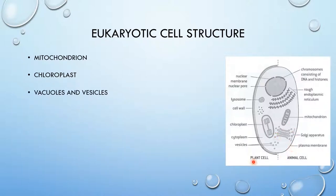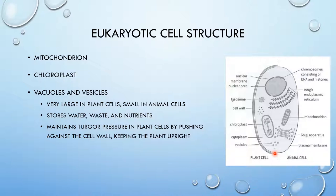Vacuoles and vesicles. They're extremely large in plant cells. The central vacuole of plant cells takes up almost the full space. They're small in animal cells like that, but they exist in large numbers. Vacuoles and vesicles store water, waste, and nutrients. They also transport materials from each part of the cell. The central vacuole of a plant cell maintains turgor pressure by pushing against the cell wall, keeping the plant upright. That's why when you don't water the plant, it starts drooping because it loses turgor pressure.